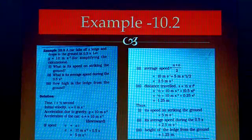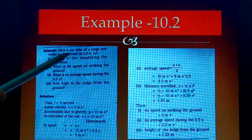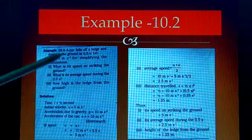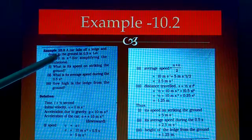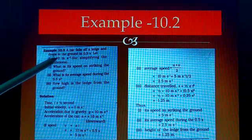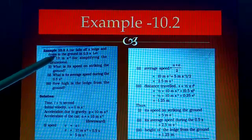Next, examples are given in the book. First example 10.2: A car falls off a ledge and drops to the ground in 0.5 seconds. Let g, the gravity - the actual value is 9.8. We can round to 10 m/s² for simplifying the calculation.